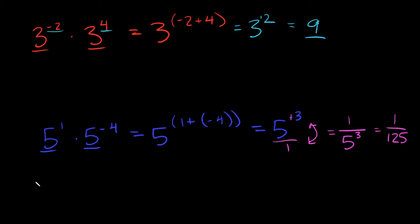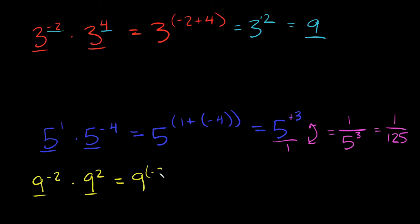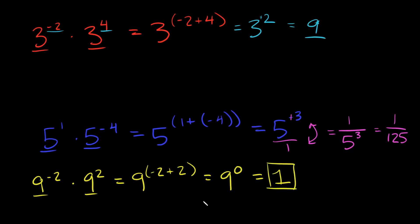One more example before we move on to negative numbers. If I gave you 9 to the negative 2 times 9 to the positive 2 — keep the base of 9, then add the exponents: negative 2 plus positive 2 equals 0. So this reduces to 9 to the 0 power, and any number raised to the 0 power equals 1.